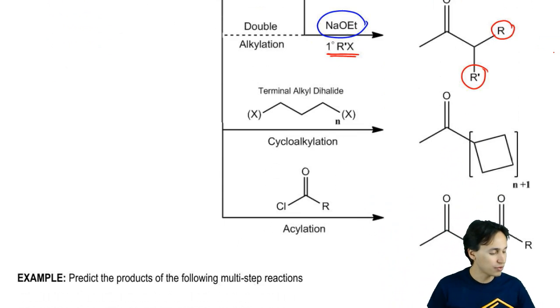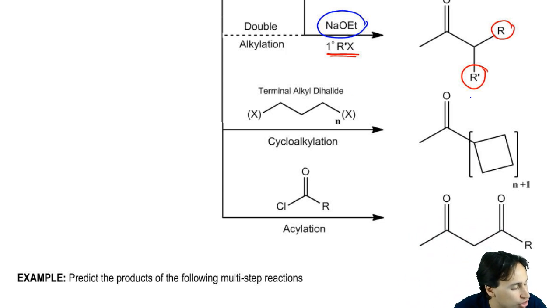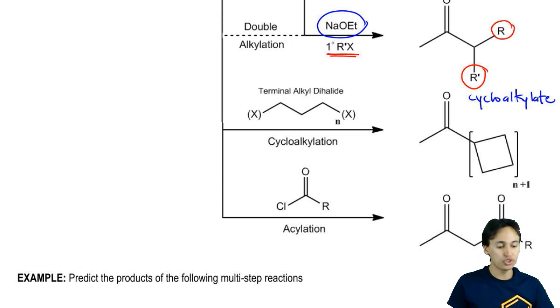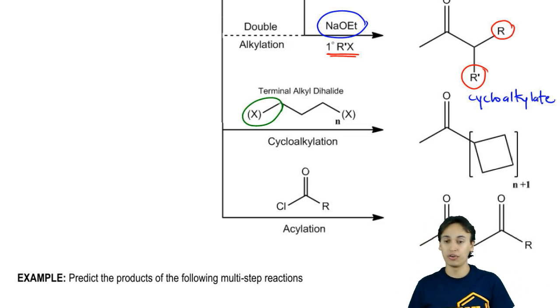What if you use, instead of using a halide or an alkyl halide, what if you use a terminal alkyl dihalide? Then what you can do is you can actually cycloalkylate. What you can do is you can react with your base, react with one side of your alkyl halide,